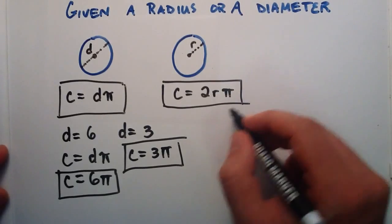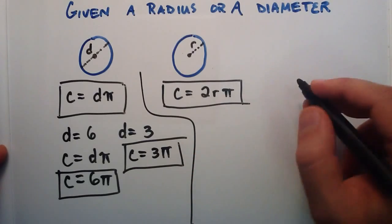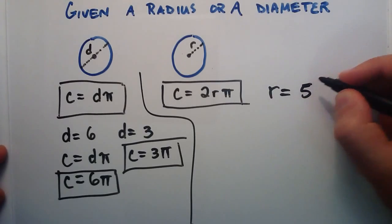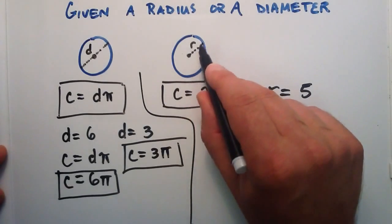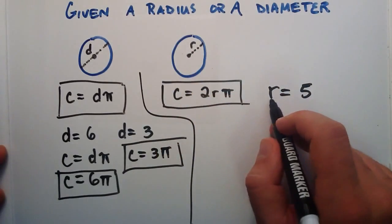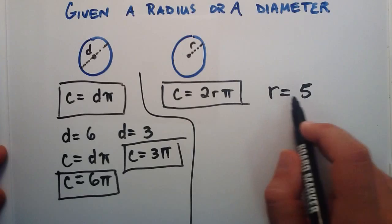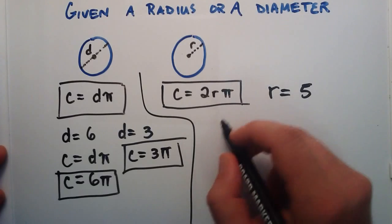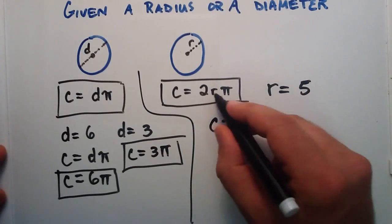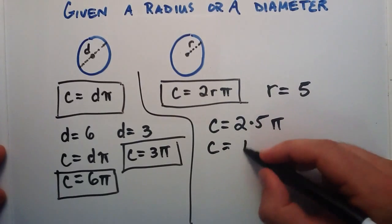So if we're given a radius, it's really almost just as simple, except we have this factor of 2 in here. So let's say that we're given a radius of 5. Our circle has a radius of 5 — the length from here to here is 5 — and we want to find the distance around the outside of the circle. Since we're given a radius, we plug it into this equation. We put 5 where the r is, since r equals 5. So the circumference is simply 2 times 5 times pi, which is 10 pi.